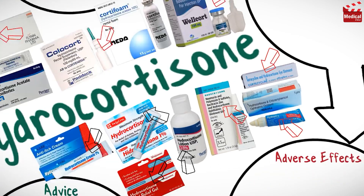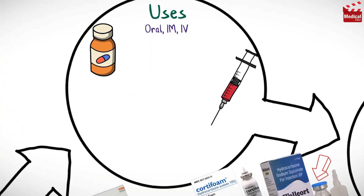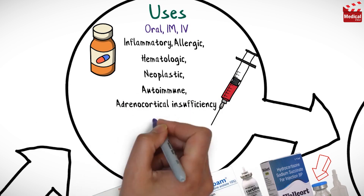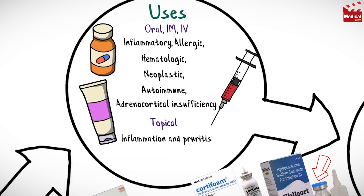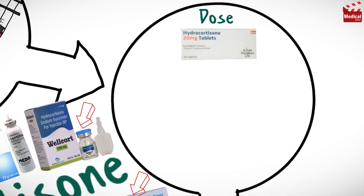Oral, intramuscular, and intravenous hydrocortisone are used in the treatment of a wide variety of chronic diseases including inflammatory, allergic, hematologic, neoplastic, and autoimmune disorders, as well as adrenocortical insufficiency. Topical hydrocortisone is used for inflammation and pruritus associated with various allergic or immunologic skin problems.